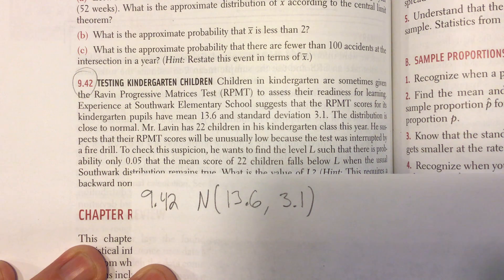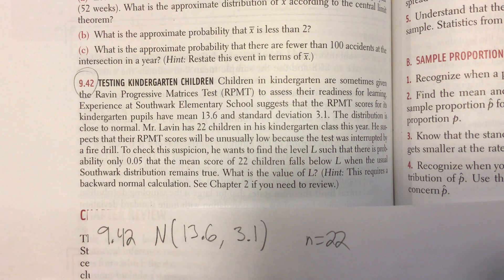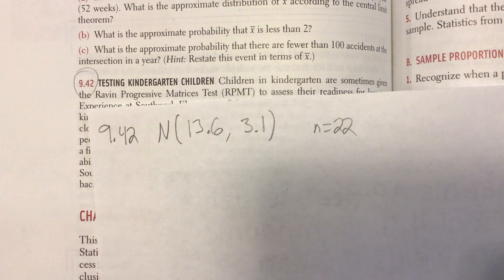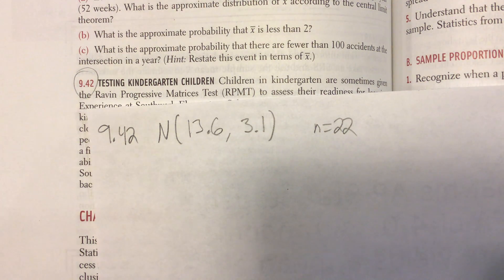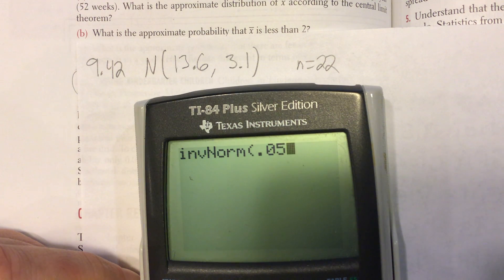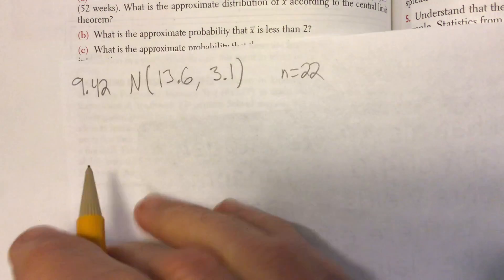Mr. Levine has 22 children in his kindergarten class this year. He suspects that their scores will be unusually low because the test was interrupted by a fire drill. To check this suspicion, he wants to find the level L such that there is probability only 5% that the mean score of 22 children falls below L when the usual distribution remains true. What is the value of L? This is an inverse normal calculation. We need a left tail with an area of 5%. You can use table A or use your calculator. So I'm going to do inverse normal. That's the Z score that would correspond to a left tail area of 5%.